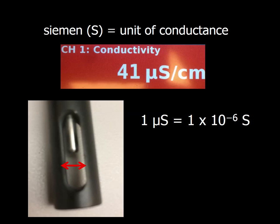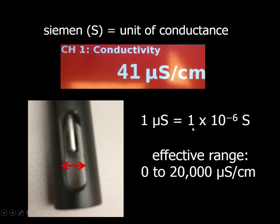Now, the numbers we're going to be working with today are pretty small, so we're going to be working on the microsiemens level, where one microsiemens equals one times ten to the minus six siemens. The range goes from zero to 20,000, where a higher number means a higher electrical conductivity. It means that the solution is conducting electricity better.